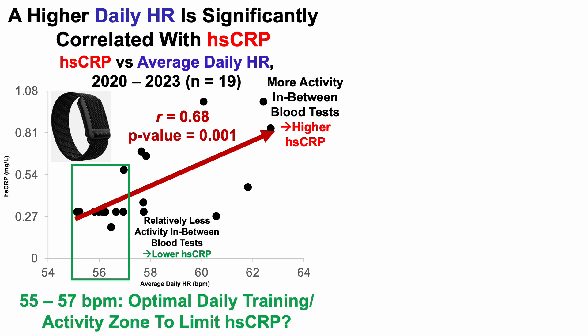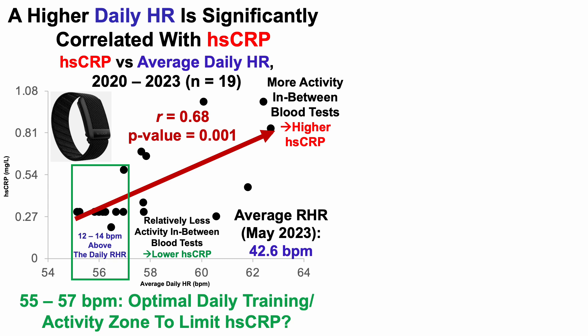These data suggest that to minimize HSCRP, there's an optimal training activity and/or stress level corresponding to an average daily heart rate of 55 to 57 beats per minute as the full-day average. To put that into perspective, my average resting heart rate for May 2023 was 42.6 beats per minute, which suggests that going 12 to 14 beats per minute above my resting heart rate may be optimal for keeping HSCRP low.